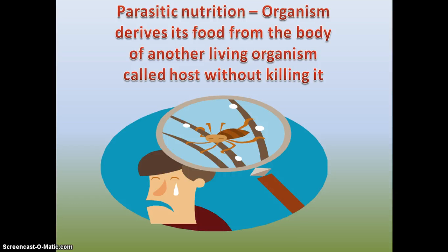Parasitic nutrition is that nutrition in which an organism derives its food from the body of another living organism, called its host, without killing it. A parasite is an organism which feeds on another living organism.